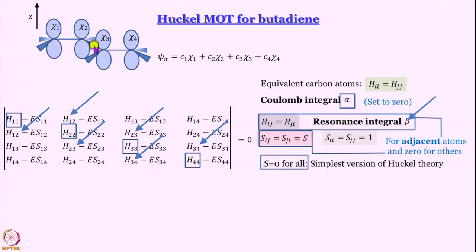So adjacent pairs are 1 and 2, 2 and 3, 3 and 4 — no other combination. For all other combinations we set them to be equal to 0, and we have discussed why we are justified in doing that. The overlap is set to 0 in all cases because we are talking about a pi overlap, which is not all that strong — it is fairly weak.